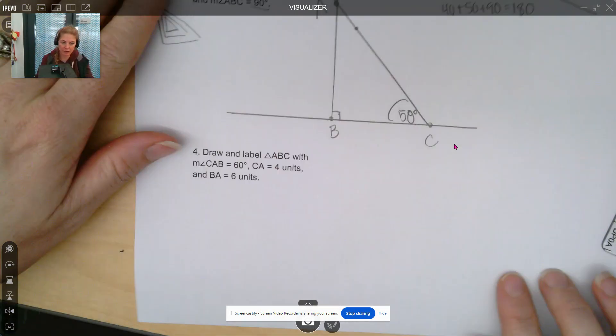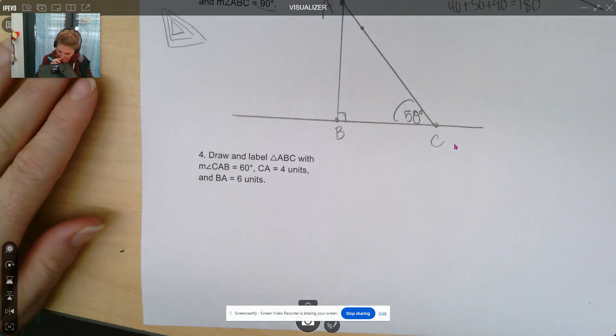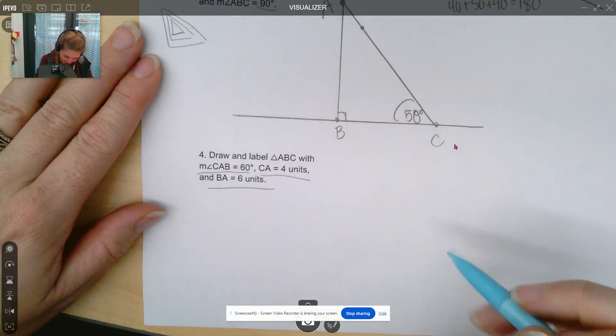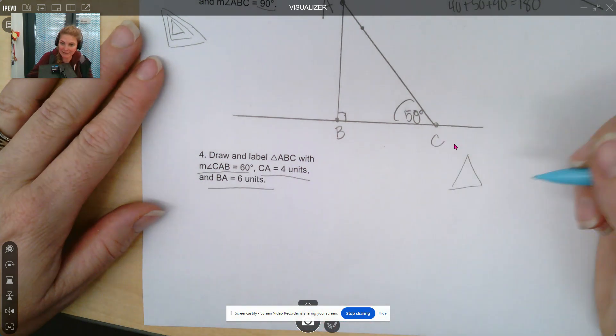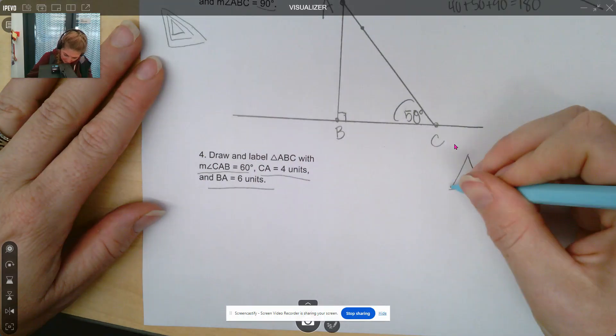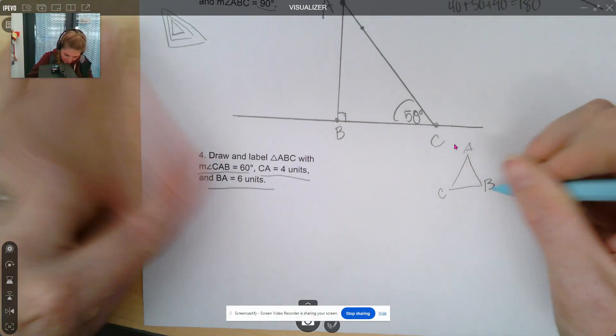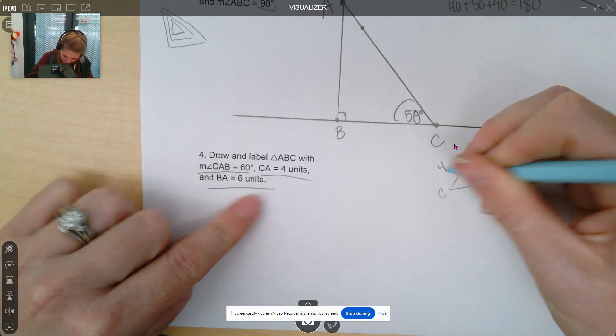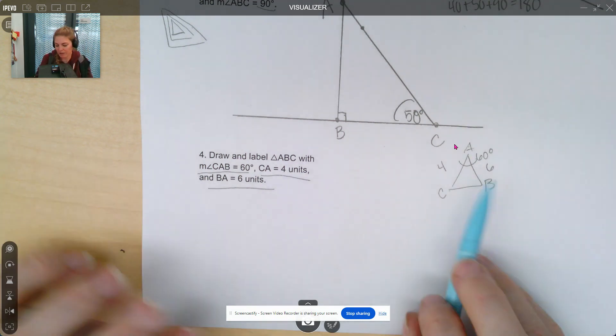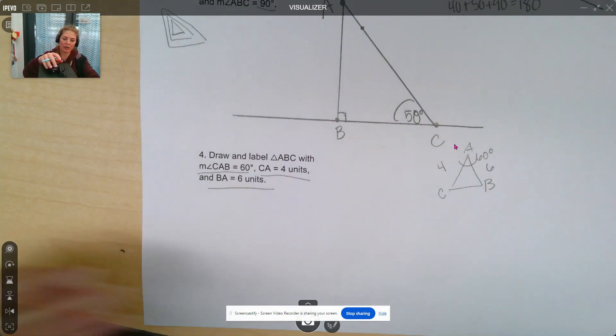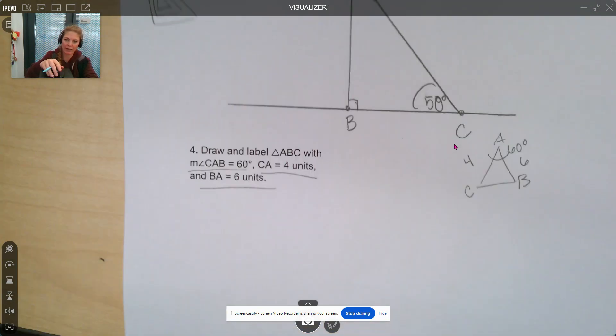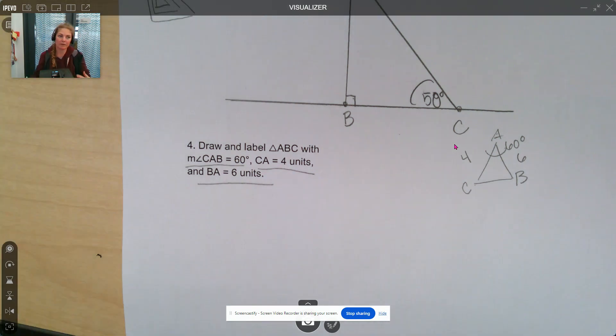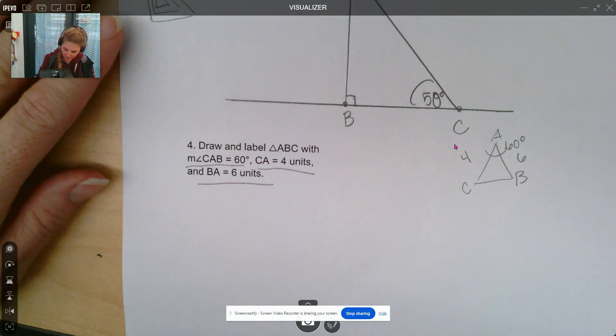Last one we have to do on this page with a protractor. And, let's see, it says measure angle C, A, B is 60 degrees, C, A is 4 units, and B, A is 6 units. So if I made a quick sketch of this and had C, A, B, A is 60 degrees, C, A is 4, and B, A is 6. So I know this is an included angle, so there's only going to be one triangle. There's just going to be one triangle that can be drawn with this, a unique triangle where you could cut all of them out and they would be able to rotate to be congruent.